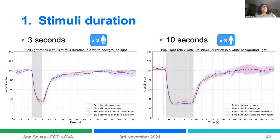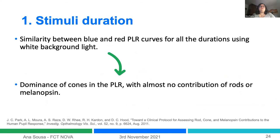This was not what we were expecting. The tendency of the curves is the same across all tested durations, and even increasing the stimulus duration did not produce the expected results. According to the literature, this could indicate dominance of cones in the pupil light reflex, with almost no contribution of rods and melanopsin. So with this protocol we are testing cone behavior, but we are interested in those cells more sensitive to blue light.